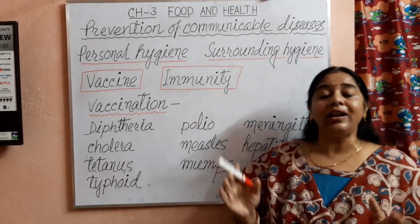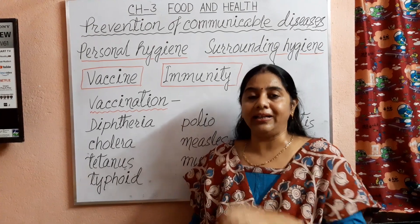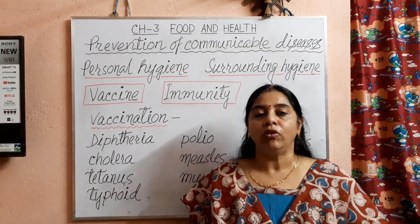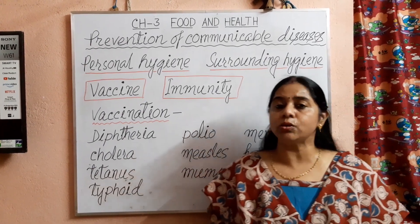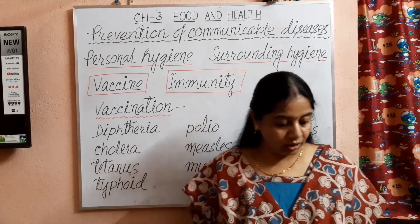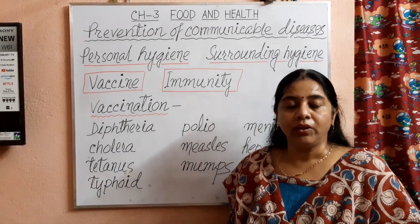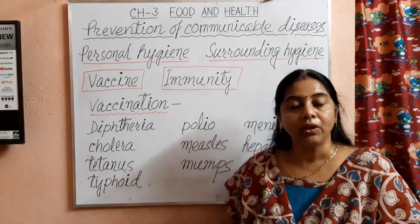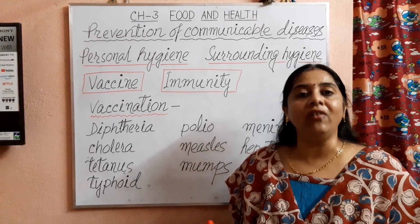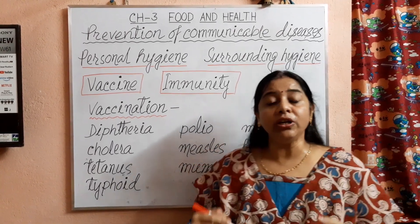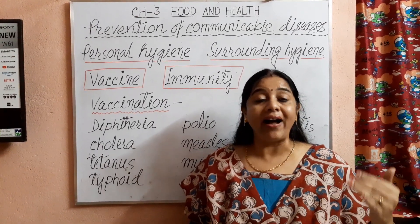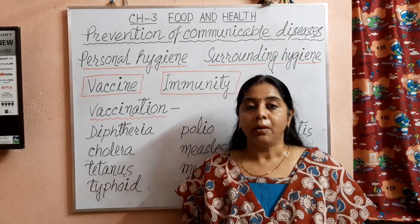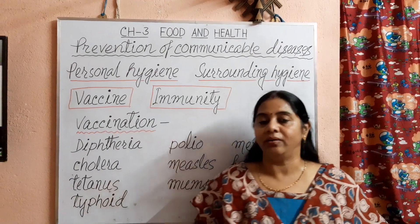So children, this is all about personal hygiene and surrounding hygiene. All of you are now acquainted with maintaining personal hygiene and surrounding hygiene to check the spreading of viruses — especially coronavirus, as we are suffering from COVID-19 now. Now, the most important thing is vaccination. What is vaccination? The process through which we can develop and increase the immunity power of our body to fight against diseases is known as vaccination.